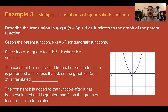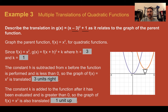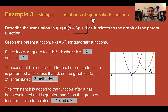Example three: multiple translations of quadratic functions. Describe the translation in g of x equals x minus three, quantity squared, plus one as it relates to the parent function. H is the opposite of that, so positive three, and k is one — opposite of h, same k. So this is three units to the right and one unit up. This format with h and k is sometimes referred to as vertex form, and there may be a value out front — the a value — which tells if something opens upward or downward. The vertex is the opposite of h, same k: positive three, positive one.